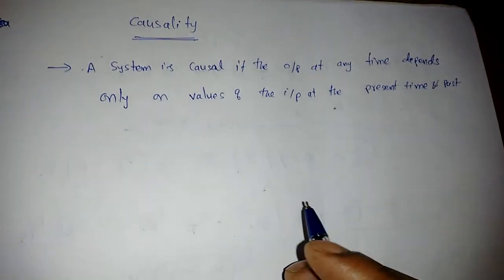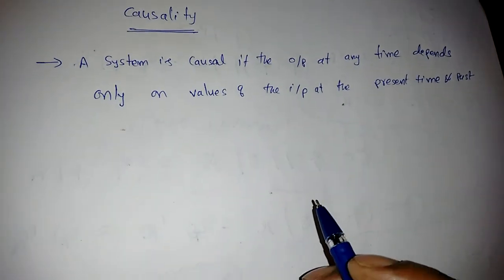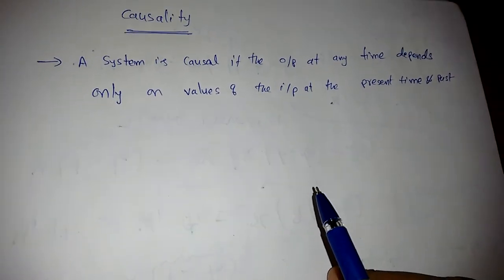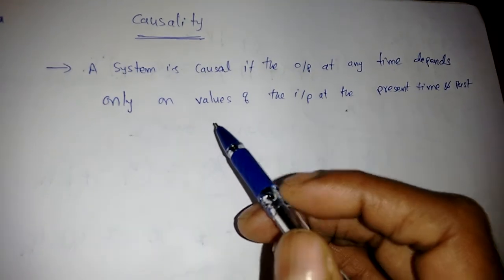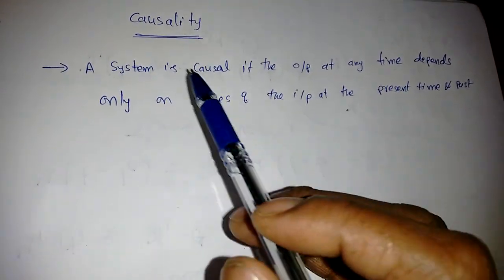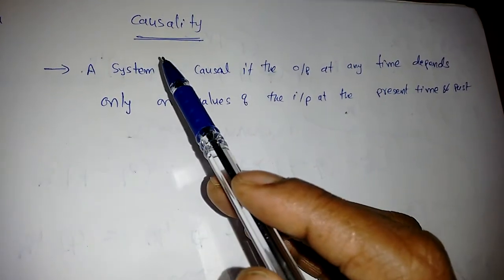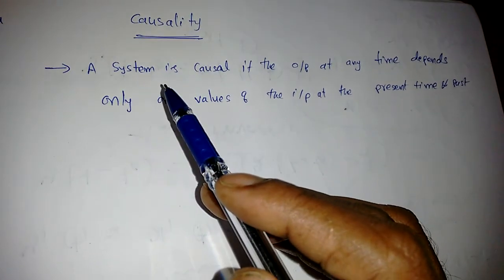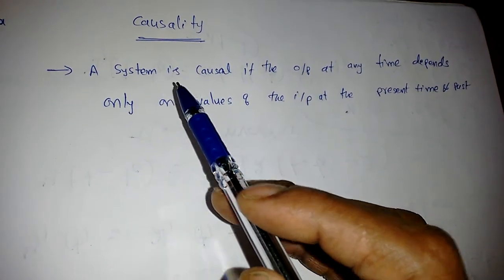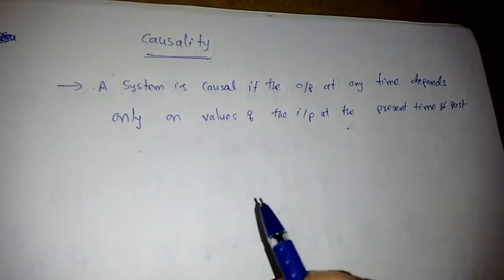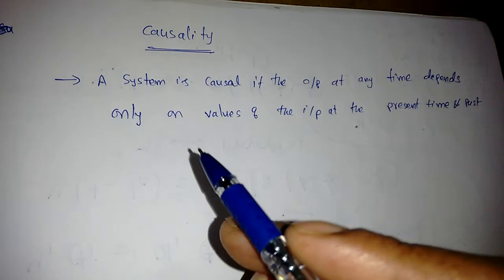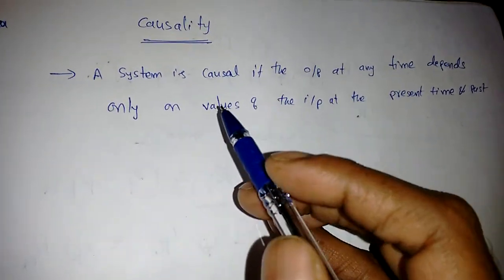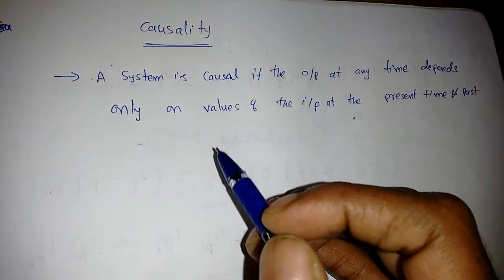Good morning everyone. This is a continuation of the previous lecture. In the previous lecture we discussed two properties of the system: memory and without memory, and the linearity concept. Now in this lecture we are going to discuss the causality property.